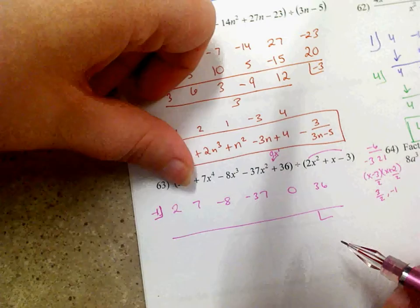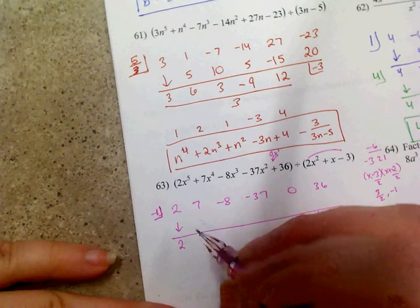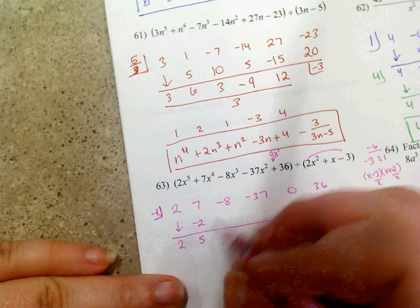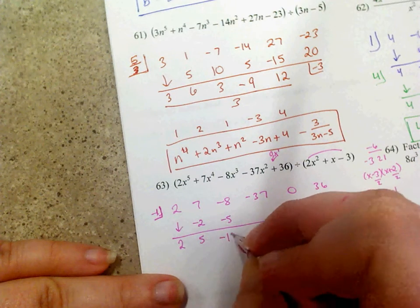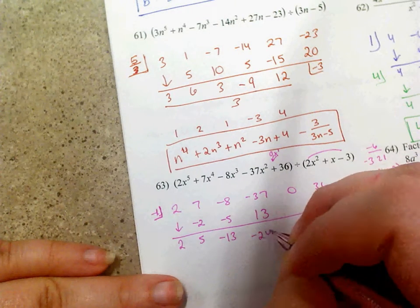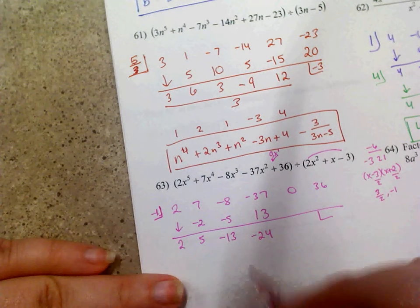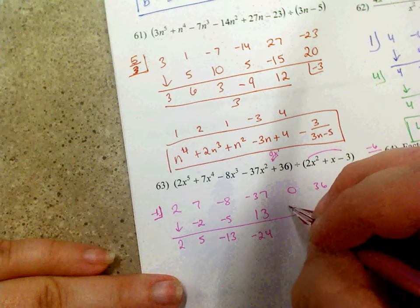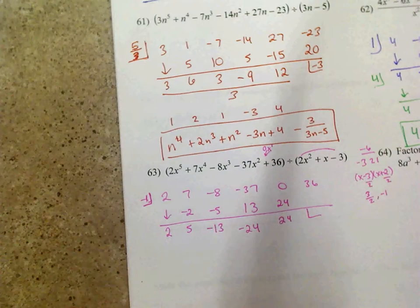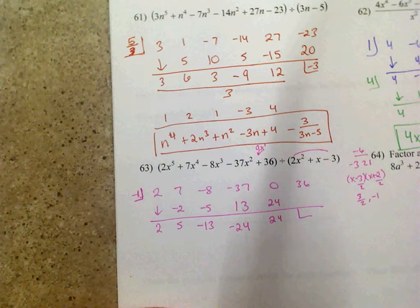Drop the 2. Negative 1 times 2 is negative 2; add, get 5. Negative 1 times 5 is negative 5; add, get negative 13. Negative 1 times negative 13 is positive 13; add, get negative 24. Negative 1 times negative 24 is 24; add, get 24. Checking the factoring: x plus 1 gives negative 1, and the divisor should be 2x minus 3.